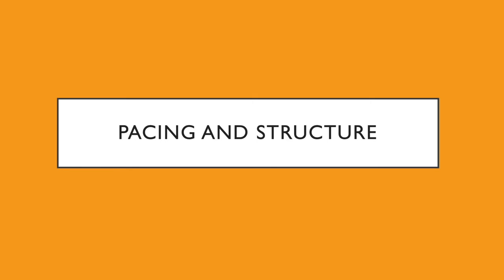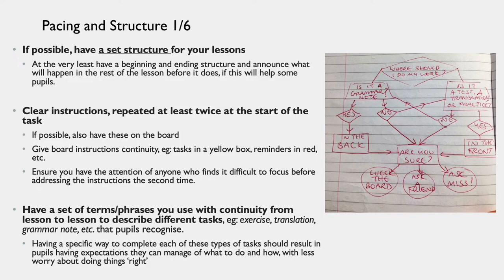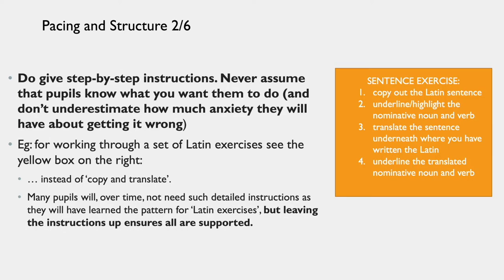With pacing and structure: if possible, have a set structure for your lessons and give clear instructions repeated at least twice at the start of the task. If possible, also have these on the board and use a continuous system so pupils can recognise them in advance. Try to have a set of terms and phrases that you use with continuity from lesson to lesson to describe different tasks — this way pupils know what the expectations are after practice. Do give step-by-step instructions and never assume that pupils know what you want them to do. Even when it's on the board, they will sometimes get it wrong or be frustrated if they think they're going to get it wrong beforehand.